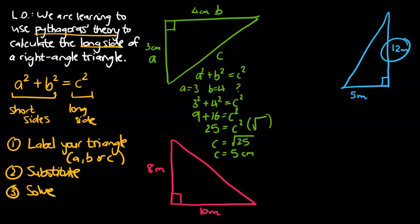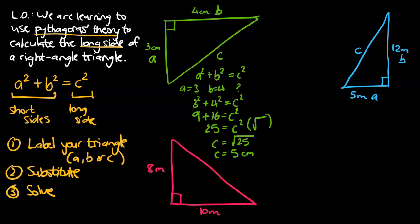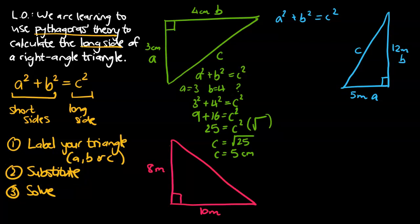That's our first question done. Let's now have a look at the blue triangle over here. First step, we always have to label the sides of our triangle. So a and b join to make that right angle — maybe a down the bottom, b up the top. Just a reminder, these can be the other way around; it doesn't matter which way around a and b are as long as they're on that right angle. Opposite the right angle is c, and that's the long side of our triangle — that's what we're trying to calculate.